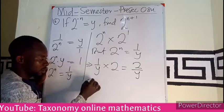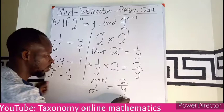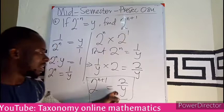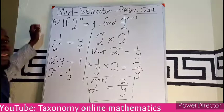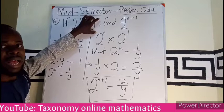So therefore, 2 exponent n plus 1 is the same as 2 over y. So this is what we are asked to find. The value of 2 exponent n plus 1 is just 2 over y. So when the question is given to you, you solve one side to get the other side. We rewrite this so that we can get it in terms of y, then when we substitute, the value will be easy to find.